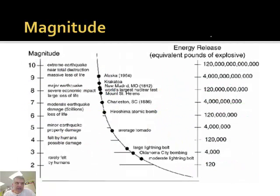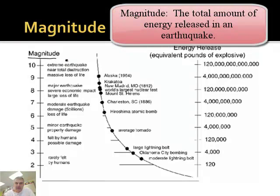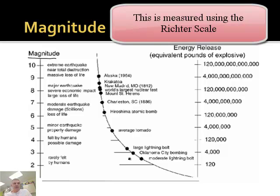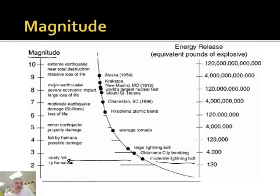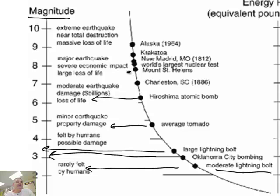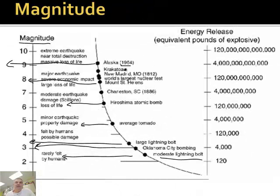Magnitude is a different thing altogether. Magnitude is the total amount of energy that comes from the earthquake. You might have heard of something called the Richter scale. A moderate lightning bolt has a magnitude of about 2. The Oklahoma City bombing was about a 3. A large lightning bolt is about 3 and some change. The average tornado is about 5. The Hiroshima bomb is 6 and some change. Mount St. Helens is 7 and some change. The Alaskan earthquake of 1964 was about 9 and some change.